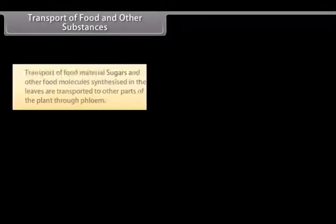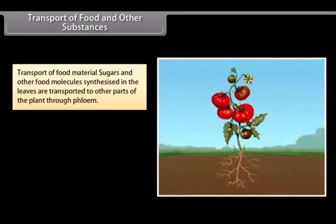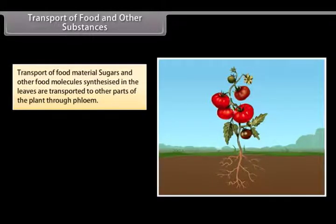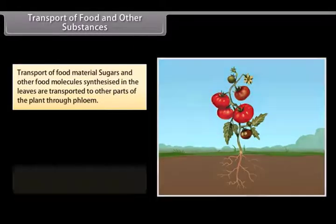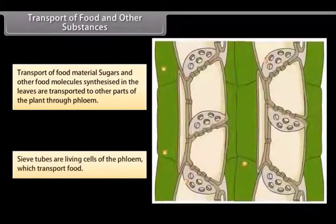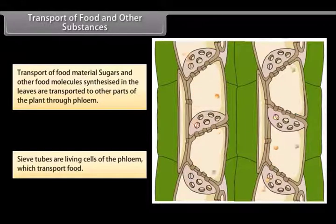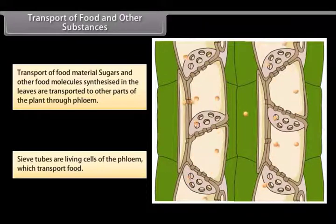Transport of food and other substances: Sugars and other food molecules synthesized in the leaves are transported to other parts of the plant through the phloem. Sieve tubes are the living cells of the phloem which transport food.